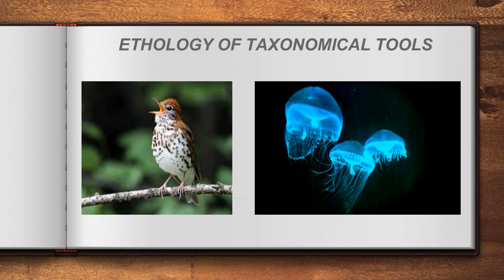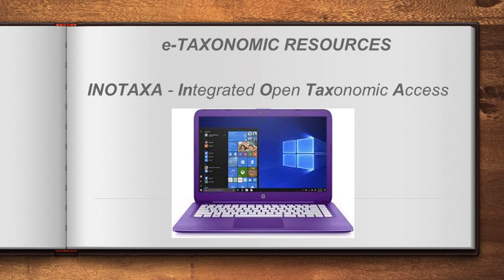Ethology of taxonomical tools refers to classifying organisms based on their behavior. For example, birds can be classified based on their sounds, and organisms can be classified based on bioluminescence — the ability to absorb and emit light. E-taxonomical resources refer to internet and computer databases such as INOTAXA (Integrated Open Taxonomical Access), based in London, which provides a large collection of taxonomical information.